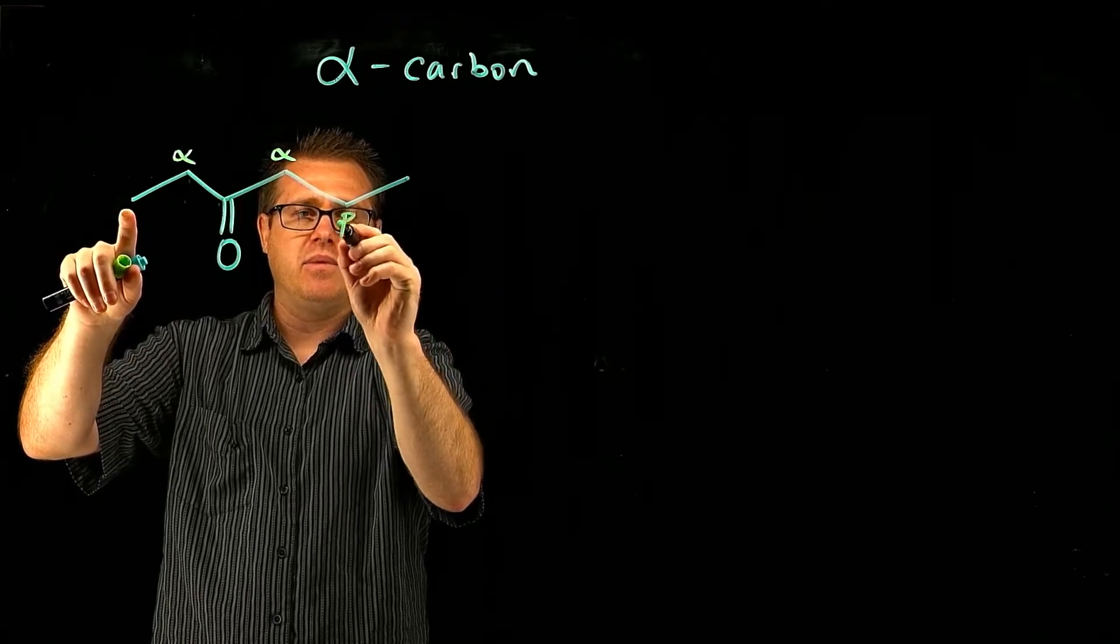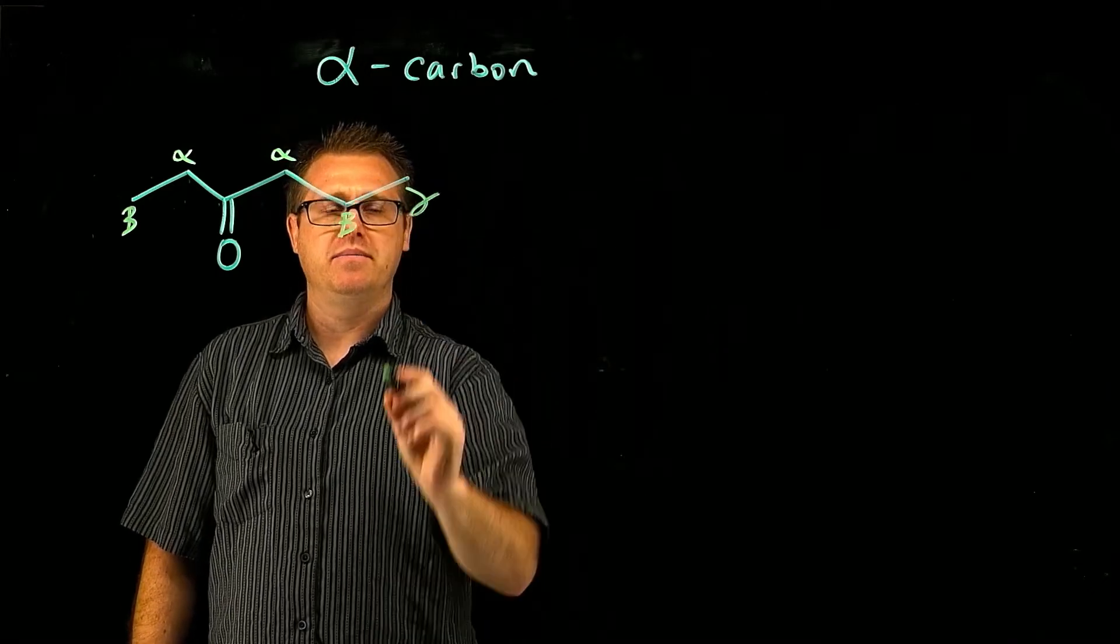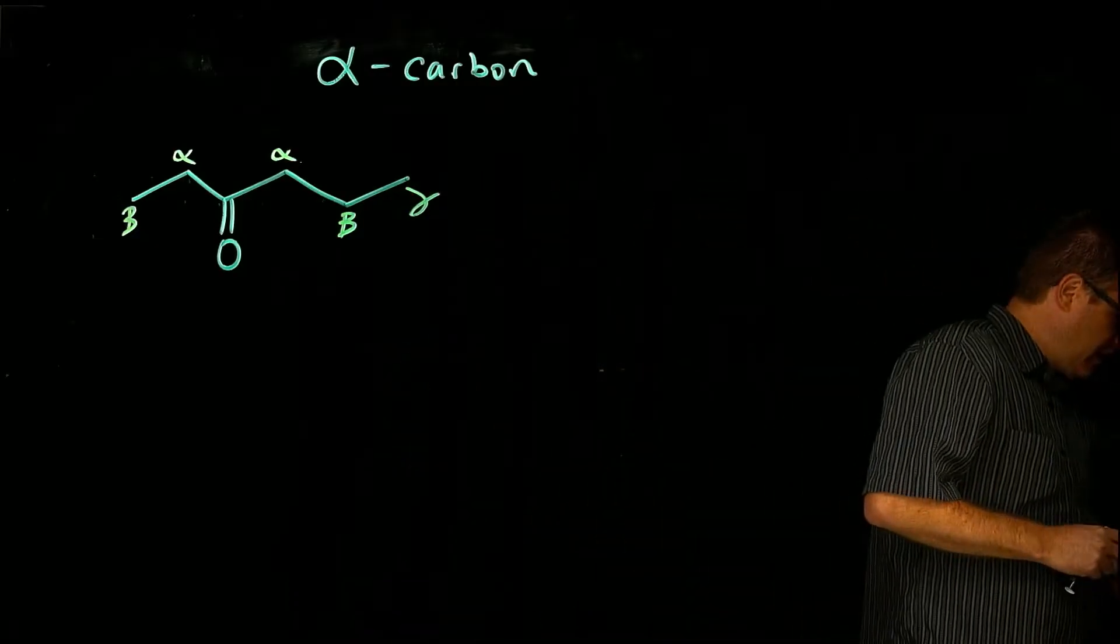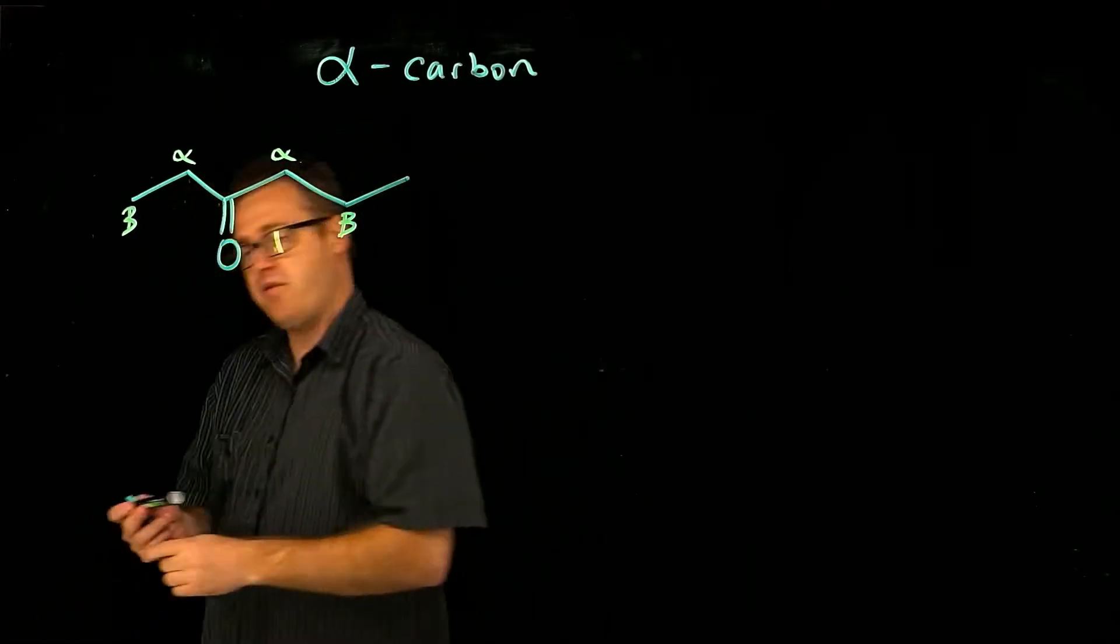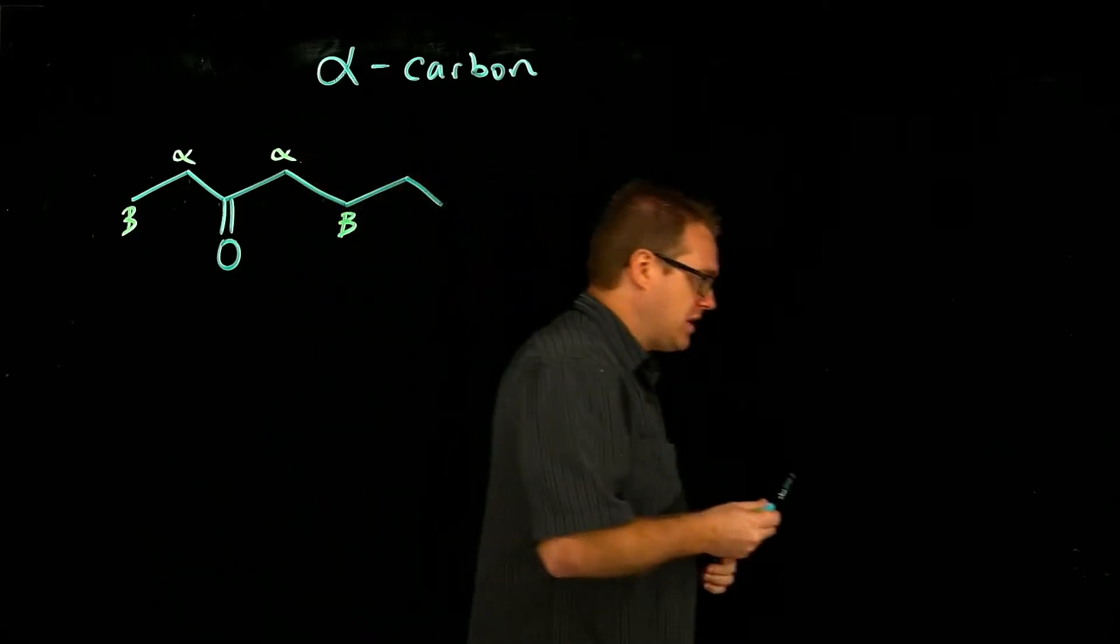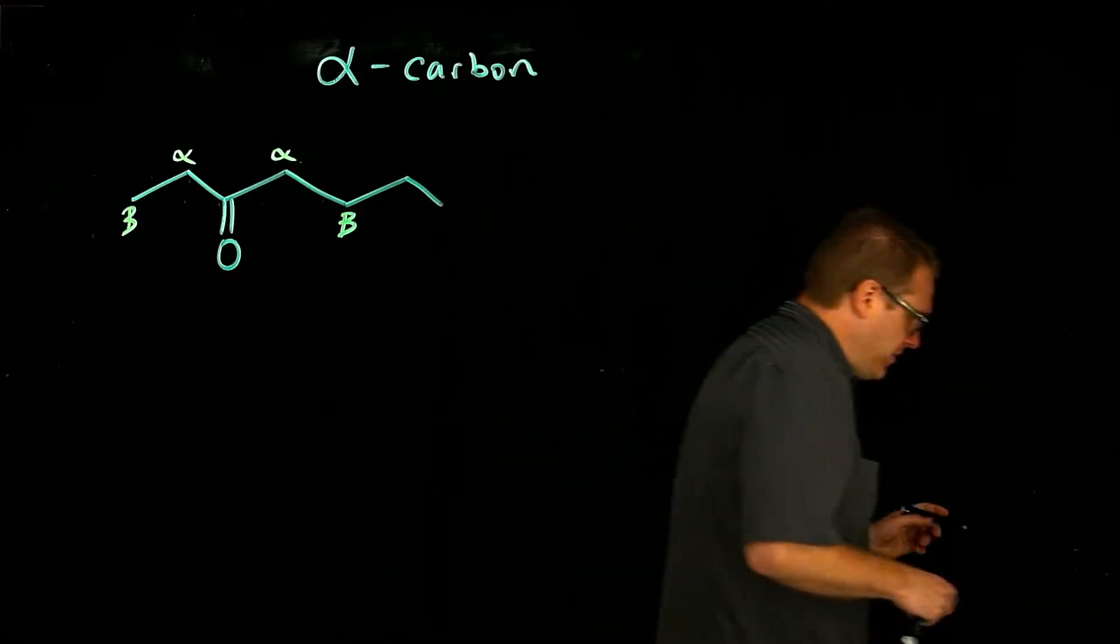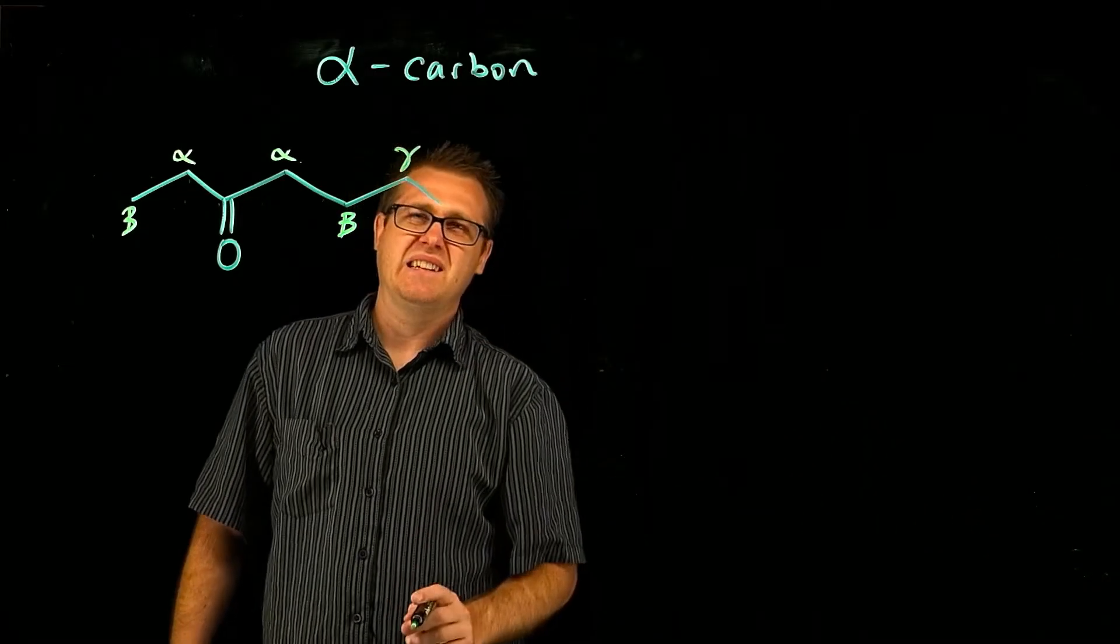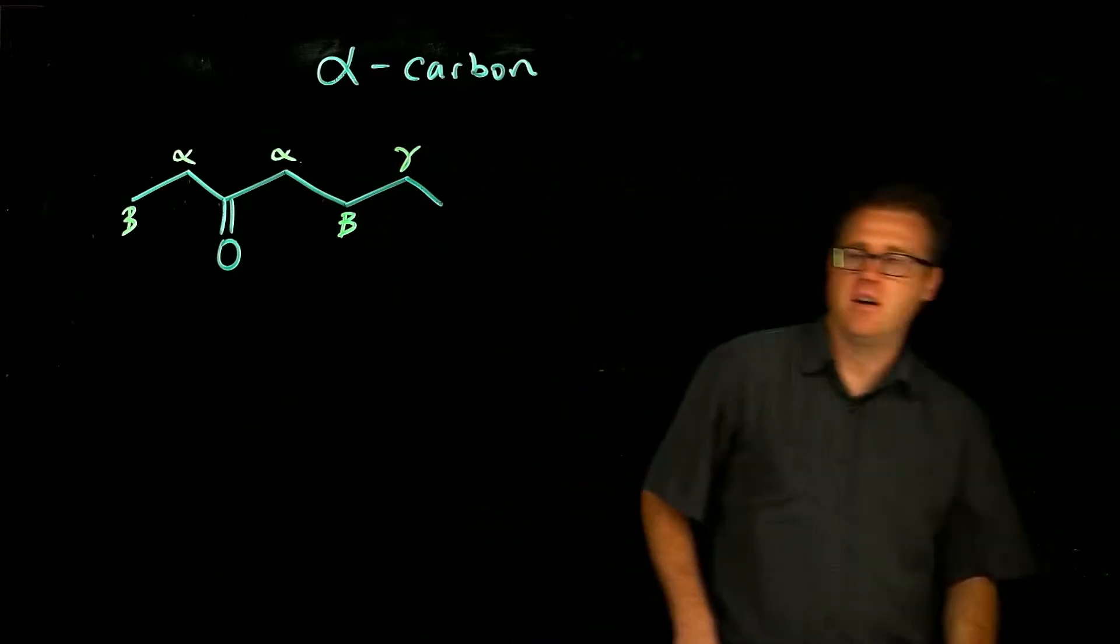When you go out further, that would be beta, beta, and this one would be gamma. And we're using the Greek alphabet, so if we extend it out, we have gamma. And then what's the next one after gamma? We would have our delta.